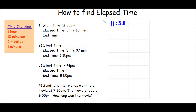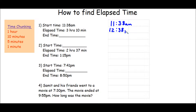We're going to start with one hour. If I add one hour to 11:38 AM, I'm going to get 12:38. And because we have passed 12 o'clock, we need to change this from AM to PM. So this is PM, and now you make a connection between the two to help you remember what you've added. This is one hour.